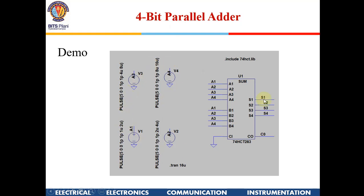After this presentation, I am going to show you a demo with this chip in LTSpice. When we take the symbol for 74283 in LTSpice, A1, A2, A3, A4 are the inputs — remember A1 is the least significant bit and A4 is the MSB. Similarly B1, B2, B3, B4, with CI as carry-in and C0 as carry-out. S1, S2, S3, S4 are the sum outputs.